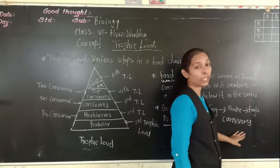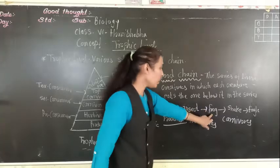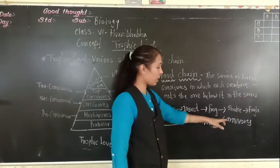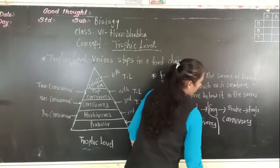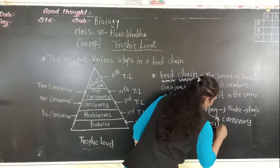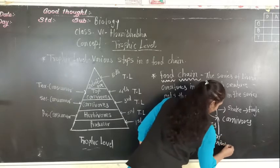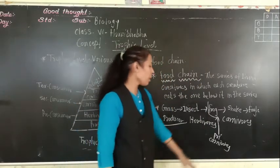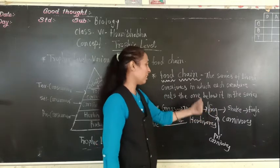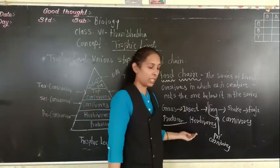But in the carnivores there are again three categories. The herbivore which eats the herbivore - those carnivores are called primary carnivores. Why is the frog a primary carnivore? Because the frog eats the insects, and the insect is a herbivore.